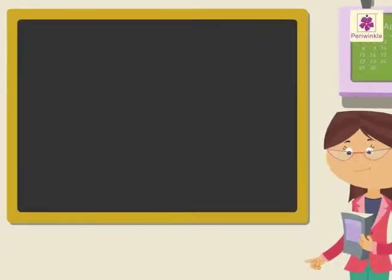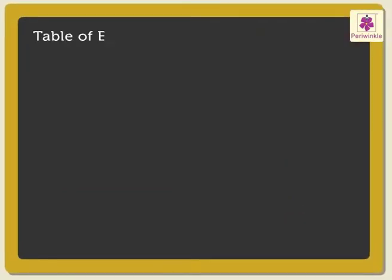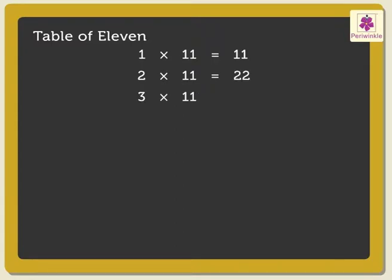The table of 11: 1 × 11 is 11, 2 × 11 are 22, 3 × 11 are 33, 4 × 11 are 44.